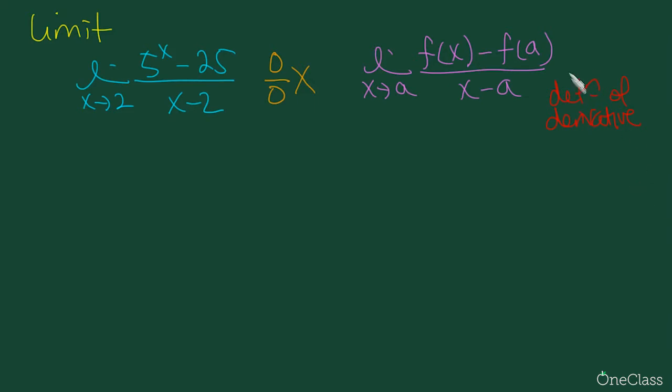Therefore, this is set to be equal to f prime at a. So this is another way of looking at it, in addition to what we know as limit h approaches 0: f(x + h) minus f(x) over h. They're the same thing, just a different way of looking at it.